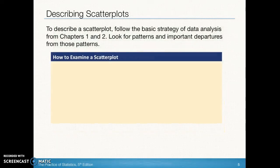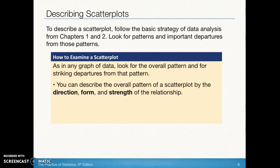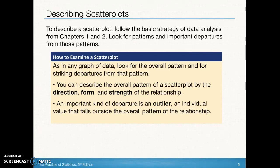When we look at a scatter plot, we want to be able to detect a pattern and we also want to be able to detect points that are off of the pattern. So first things first, look at the pattern — what do you see? You're going to frame that with direction, form, and strength. Then look for any departures from the pattern. Do you see any points that are overall in the X direction or in the Y direction that are off of our overall pattern?